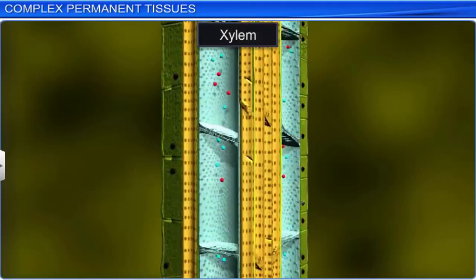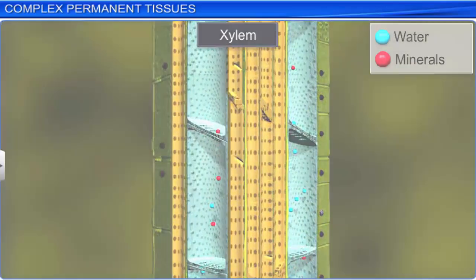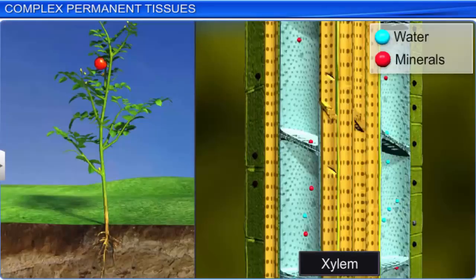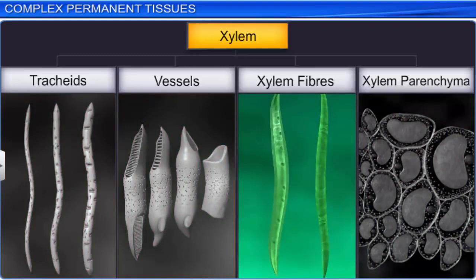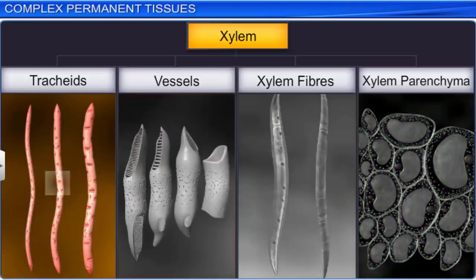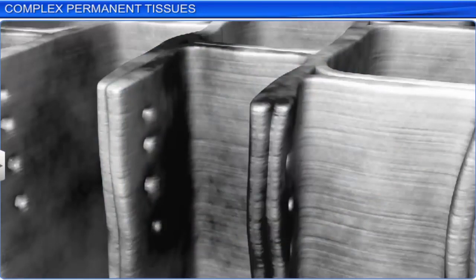Xylem performs the function of conduction of water and minerals from the roots to the stem and leaves. It also provides mechanical strength to the plant. Xylem consists of four different types of cells: tracheids, vessels, xylem fibers, and xylem parenchyma. Tracheids are elongated, angular, lignified cells with tapering ends. They are dead and without any protoplasm. The inner layers of the cell walls in tracheids vary in thickness.